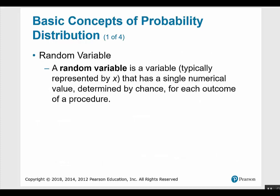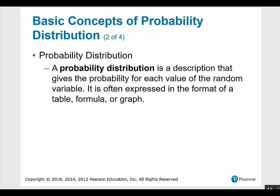A random variable is a variable typically represented by x that has a single numerical value determined by chance for each outcome of a procedure. A probability distribution is a description that gives the probability for each value of the random variable. It's often expressed in the form of a table, graph, or formula.